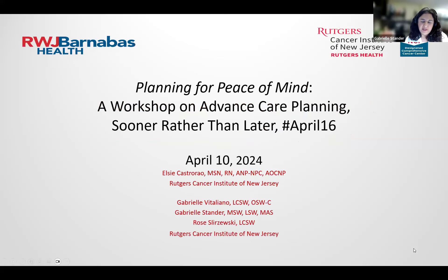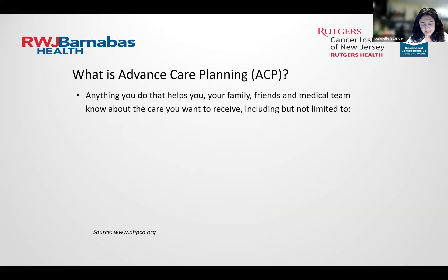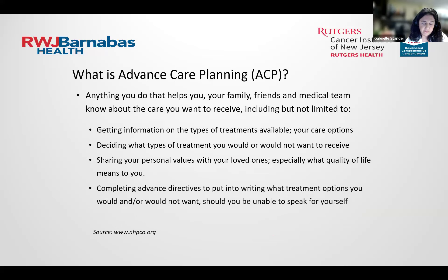Hi everyone, welcome. I'm Gabrielle Stander and I'm on the social work team here at CINJ. Many of you have probably heard the term advanced care planning before, but what does it actually mean? ACP — advanced care planning — is anything you do that helps you, your family, friends, and medical team know about the care you want to receive, including getting information on types of treatments available, deciding what types of treatment you would or would not want, sharing your personal values with your loved ones especially what quality of life means to you, and completing advanced directives to put into writing what treatment options you would or would not want should you be unable to speak for yourself.